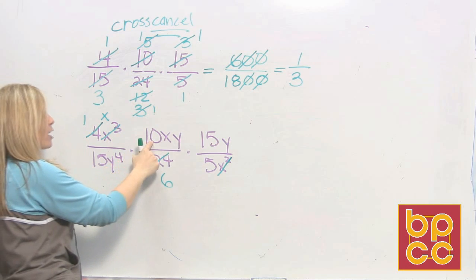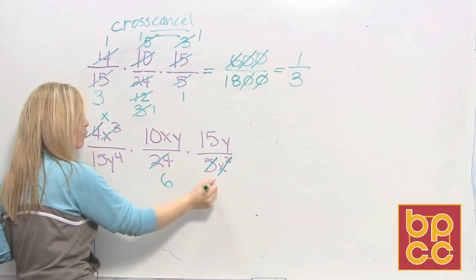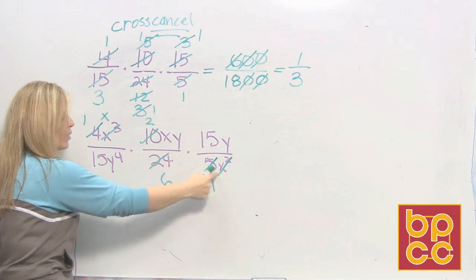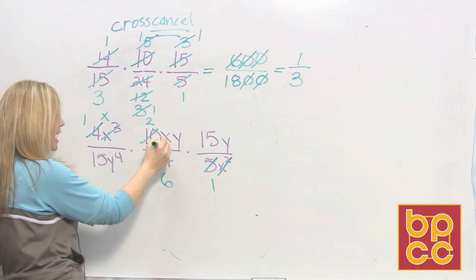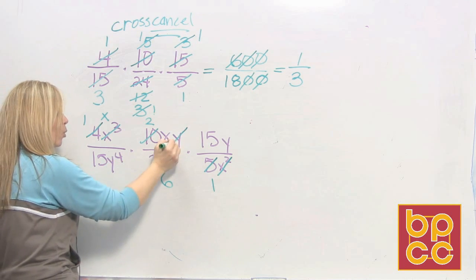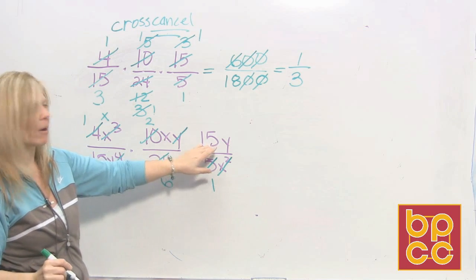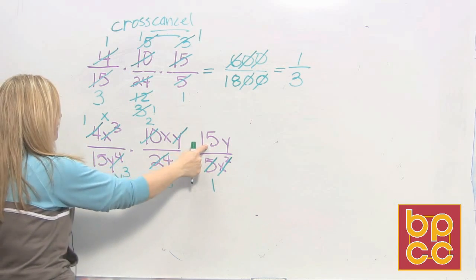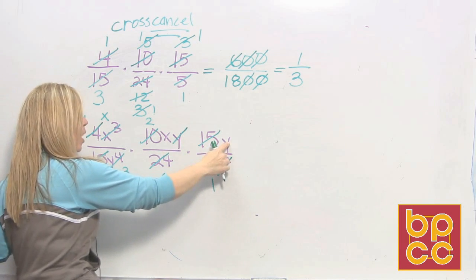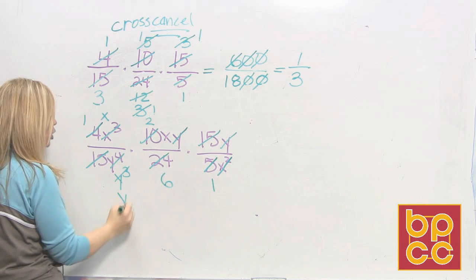I go to the next numerator, 10. I see what I can divide it by. 10 can divide by 5. 5 goes into 5 once. 5 goes into 10 twice. I have an x. Well there are no more x's left in the denominator, so I have to keep that. I have a y. I can divide it by y to the fourth. Take that one away. Take one from 4 and I'm left with 3. I go to the next numerator. I have a 15. 15 can divide by 15 and that would cancel out. I can take this y and divide it by y cubed. 1 from y cubed is y squared.